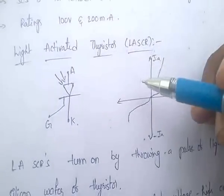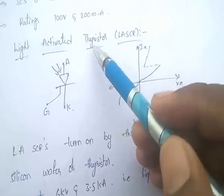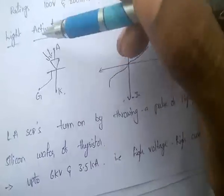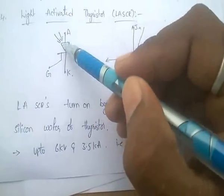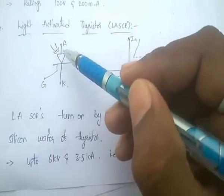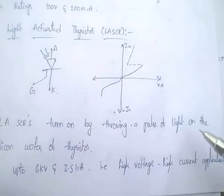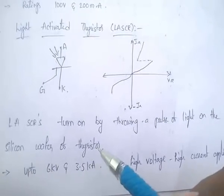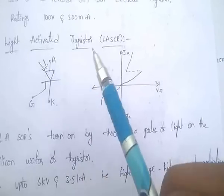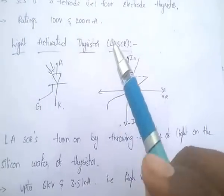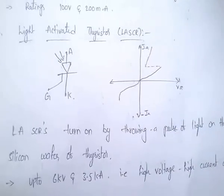Next: Light Activated Thyristor. The SCR is turned on by throwing a light on the silicon wafer of the thyristor, which causes it to conduct. These light-activated thyristors are used for high voltage and high current applications — up to 6kV and 3.5kA.